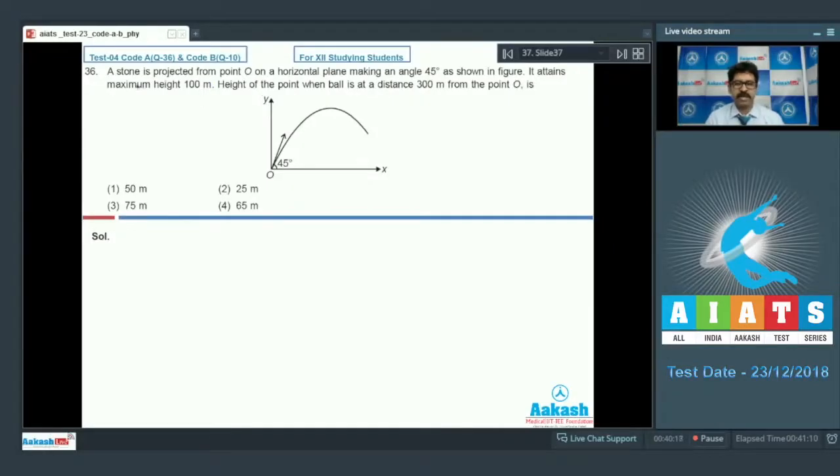Question number 36. A stone is projected from point O on the horizontal plane at a 45 degree angle as shown in the figure. It attains a maximum height of 100 meters. The angle of projection is 45 degrees, so this is a case of maximum range. R max is 4 times the maximum height, and here the maximum height h is 100 meters, so range is 4 times the height, that is 400 meters.